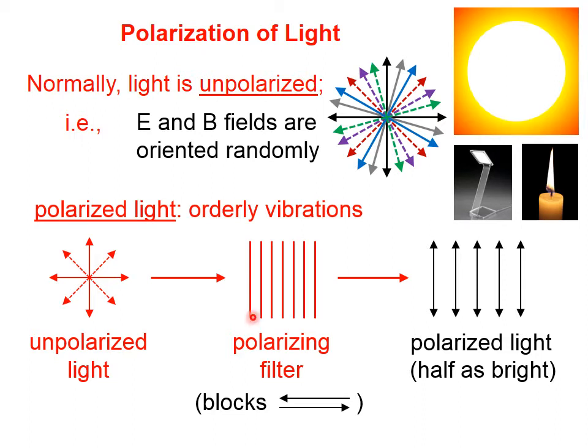You can think of this polarizing filter as jail cell bars. A very skinny person on the other side of the jail bars, if that person is standing up, can sneak through. But if that same skinny person is lying on the ground and tries to roll their way out of the jail, they're not going to get through. So any light that is oriented perpendicular to the transmission axis of the polarizing filter is going to be blocked.